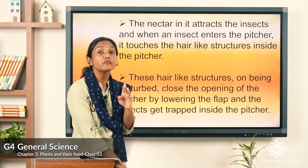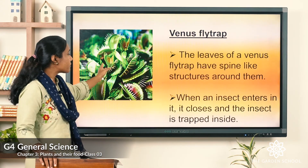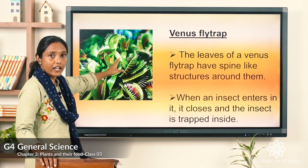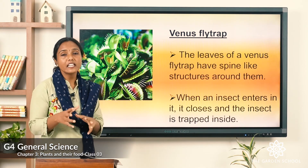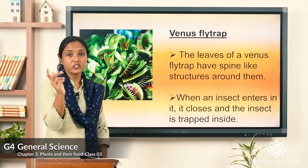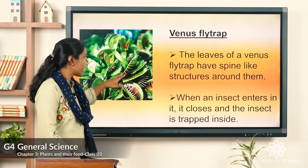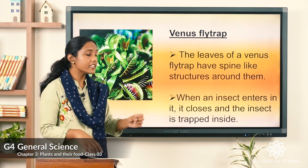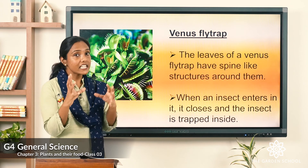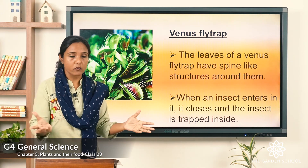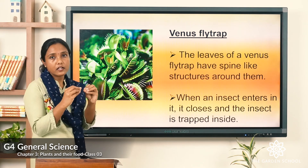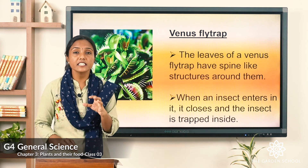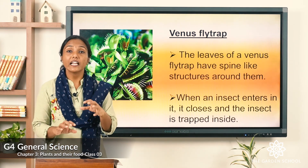Next is the Venus fly trap. It has spine-like structures around the edges of its leaves. When an insect enters, it closes and the insect gets trapped inside and cannot come out. You can see here — one insect gets in and it closes. That is the reason why we call these two plants plants that feed like animals.